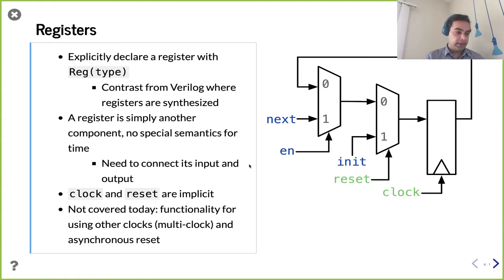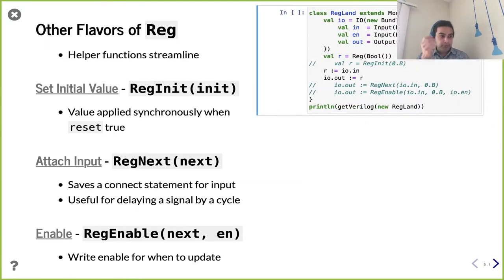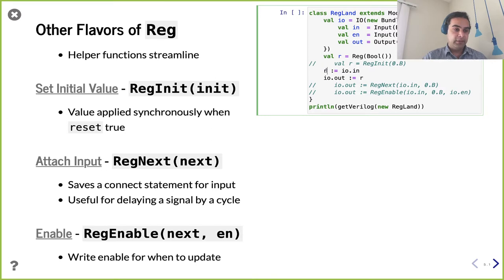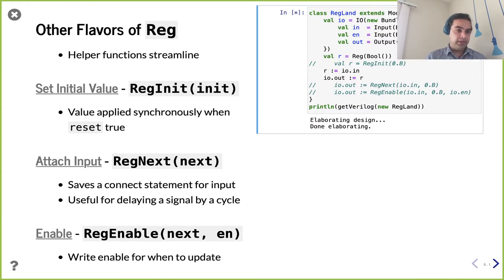There are multiple flavors of reg. The simplest is to say reg and then a type, like bool for a single bit. Here I've made a little place to play around with registers. We declare a register of type bool, connect its input to IO.in, and connect the output of the register to the IO output. Let's go ahead and run this and see the Verilog output.